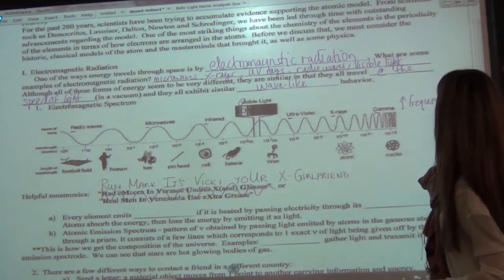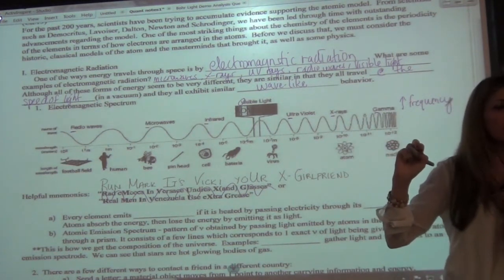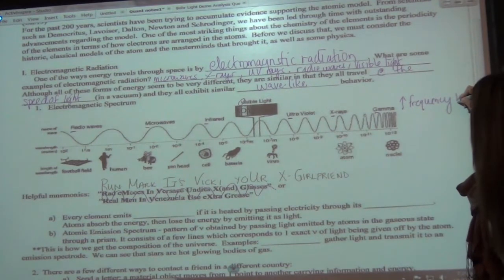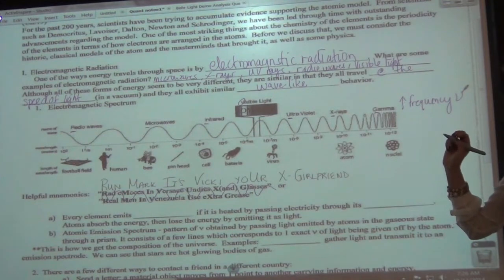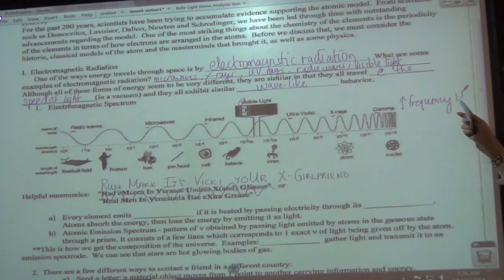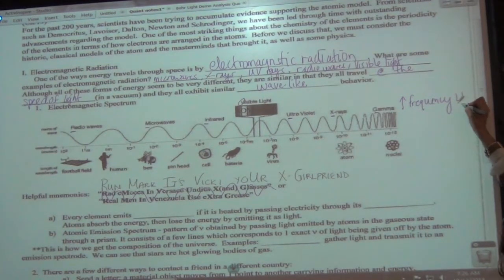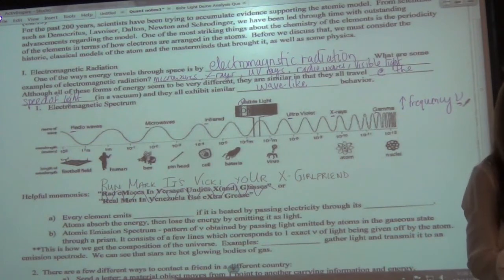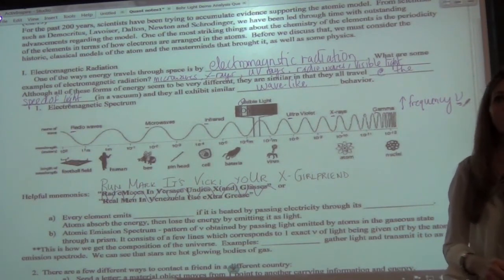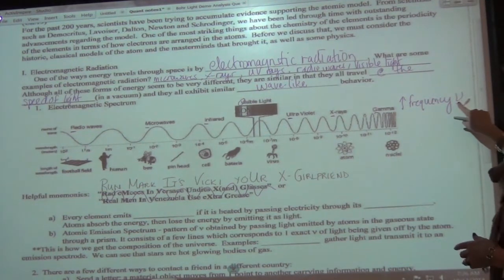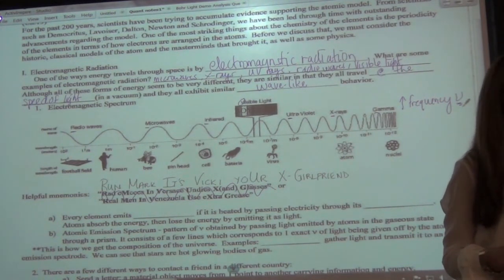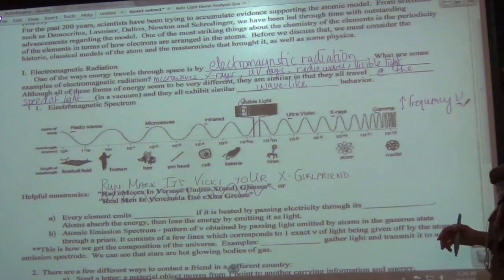Everybody say 'nu.' The symbol nu looks like a V-U mix. I'm going to call it 'frequency' — spelled with a V — so you can get the variable right. It looks like a V, so we say 'frequency' to help remember that nu is the variable for frequency.